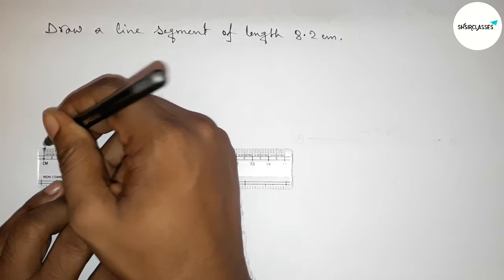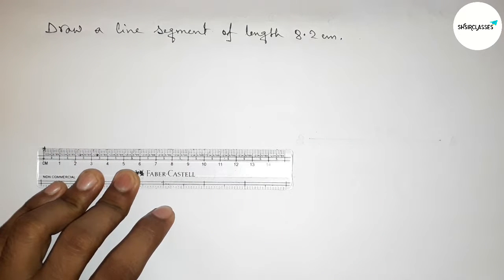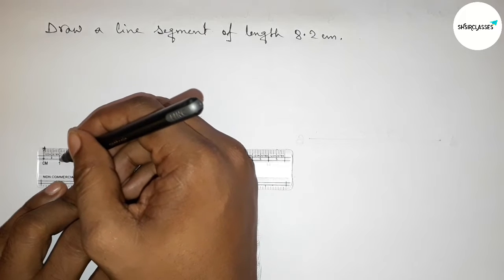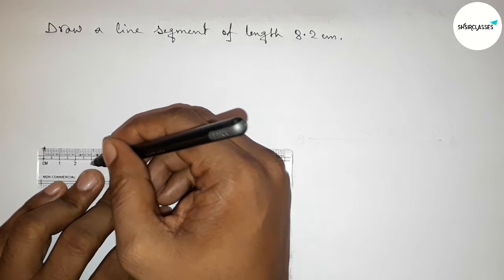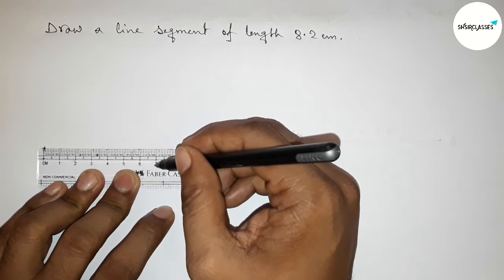So this is the starting zero, then counting: this is 0, 1, 2, 3, 4, 5, 6, 7, 8.